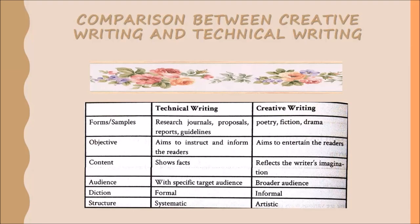We have here a table of comparison between creative writing and technical writing. Under technical writing, the forms include research journals, proposals, reports, and guidelines. Its objective is to instruct and inform the readers. The content shows facts, it has a specific target audience, the diction is formal, and the structure is systematic. On the other hand, creative writing forms include poetry, fiction, and drama. The objective is to entertain the readers. The content reflects the writer's imagination, it has a broader audience, the diction is informal, and the structure is artistic.